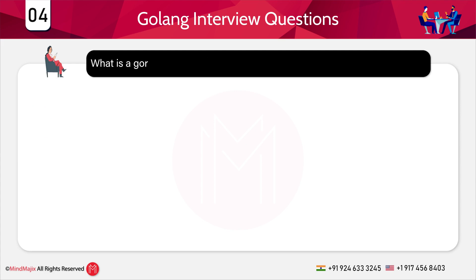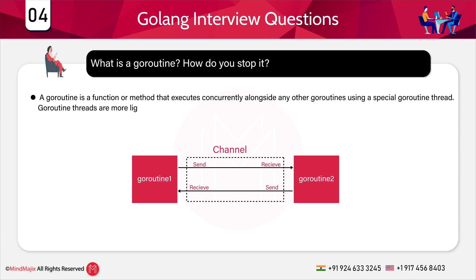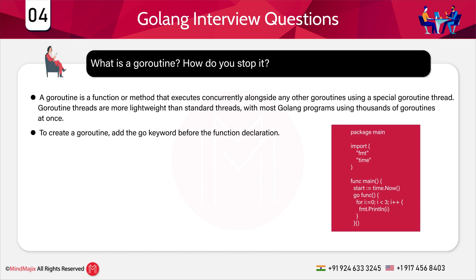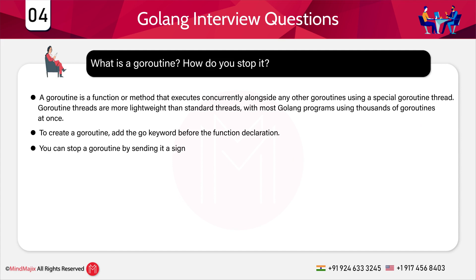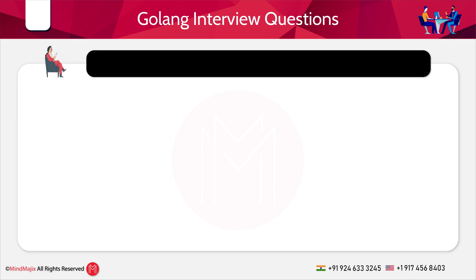What is a goroutine and how do you stop it? A goroutine is a function or method that executes concurrently alongside other goroutines using a special goroutine thread. Goroutine threads are more lightweight than standard threads, and most Golang programs use thousands of goroutines at once. To create a goroutine, add the 'go' keyword before the function declaration. You can stop a goroutine by sending a signal channel — goroutines can only respond to signals if told to check, such as at the top of a for loop. The main goroutine also stops automatically when the program terminates.